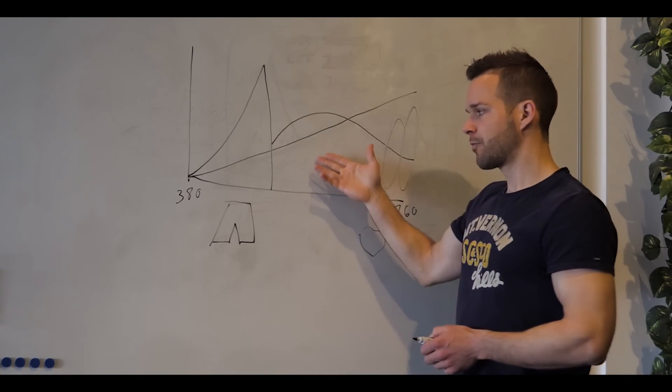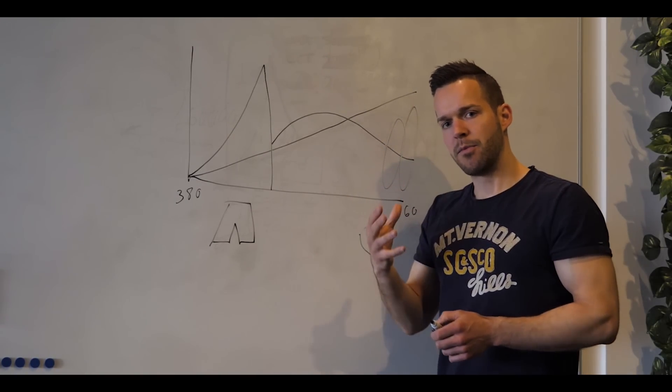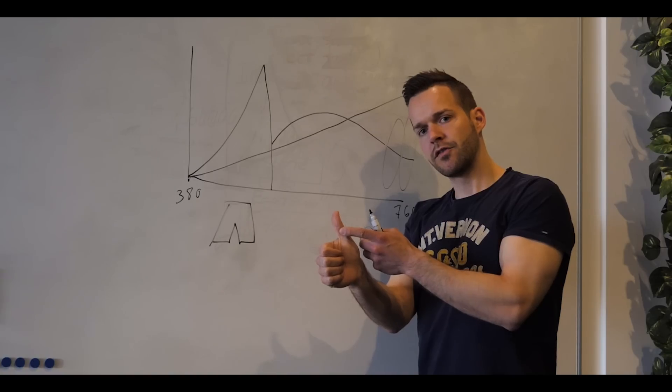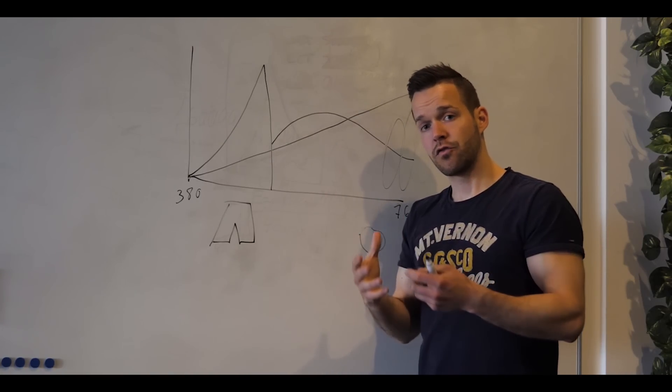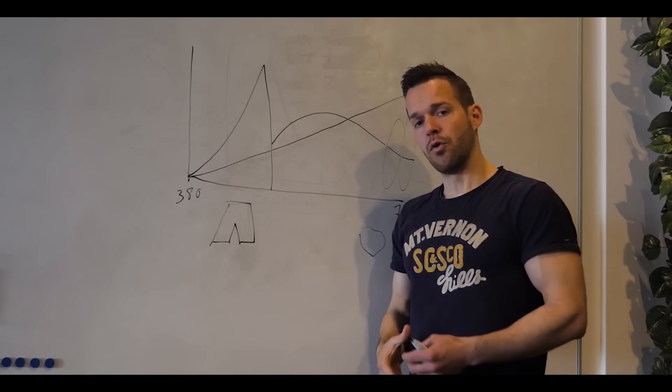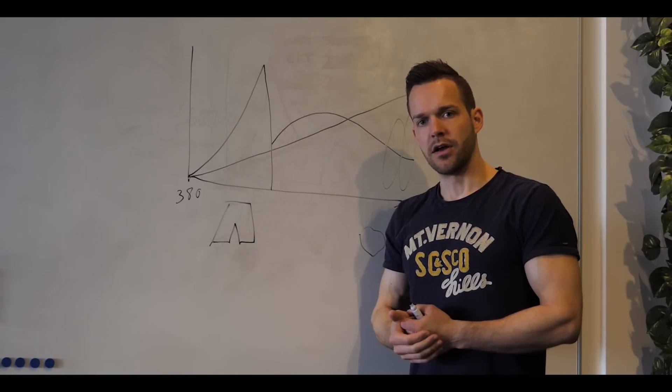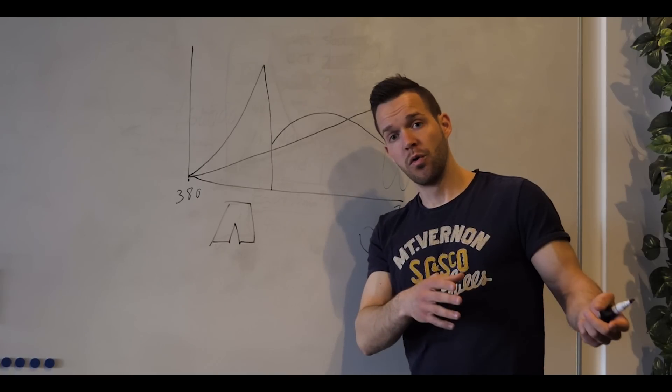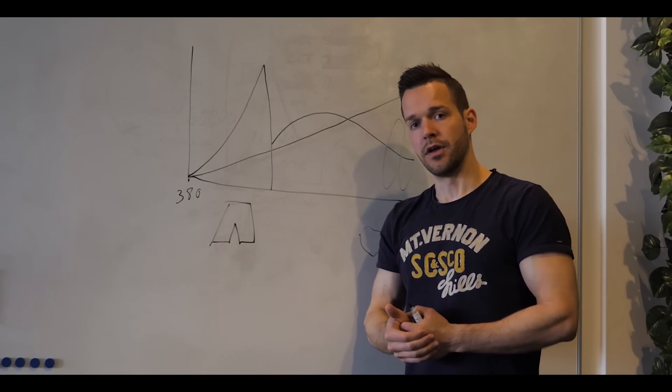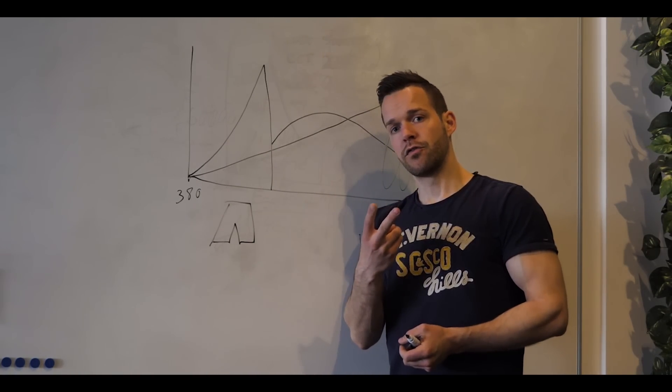So this is basically how it is. I can go really deeper than that, but it's just you have to remember that we have a color rendering index, which is how the light source is able to generate colors in your room. And you also have the Kelvin, the color temperature, which is how cold or how warm the color is on the light source. So these are the two values that you have to remember.